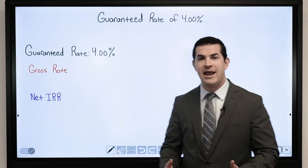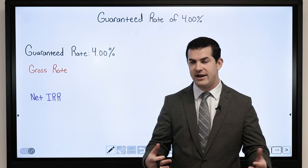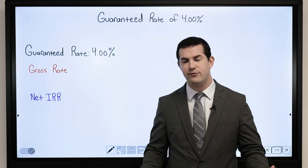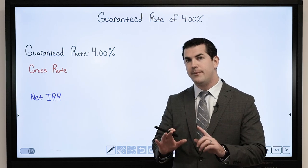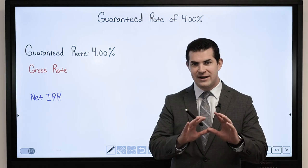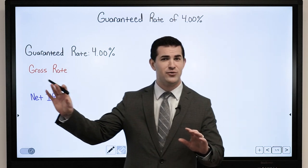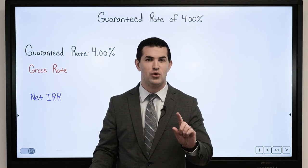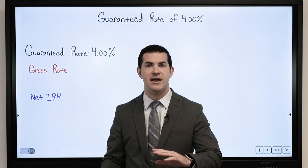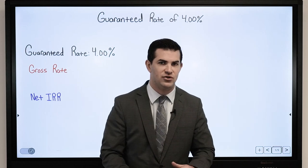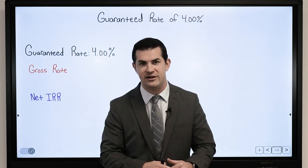Meaning I am purchasing a whole life insurance policy and I can design it for maximum cash value — we're going to show you an example here. But whenever I see a guaranteed rate, or a dividend rate for that matter, that is a gross rate that is credited after the cost of insurance and after the mortality expenses.